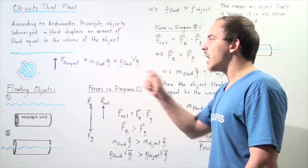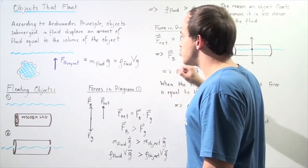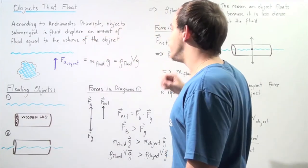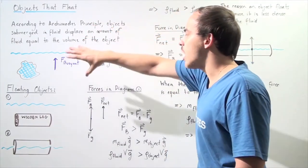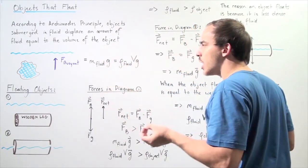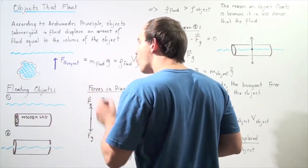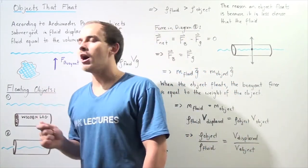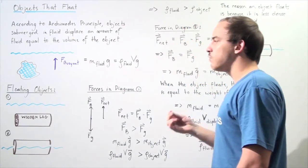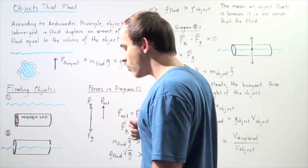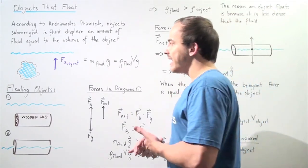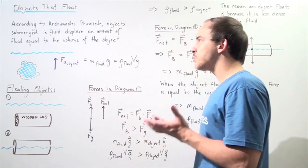If we choose the volume of the object to be V and the density of the fluid to be ρ_fluid, we can replace the mass of the fluid with ρ_fluid times the volume of our object. This equation allows us to calculate the magnitude of our buoyant force. The buoyant force always points in the opposite direction of the force of gravity — it points upward along the y-axis when the force of gravity points downward along the y-axis. That is what Archimedes' Principle states.